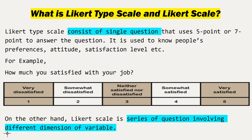For example, there is a question: how satisfied are you with your job? The respondent will have 5 categories: number 1 — very dissatisfied, number 2 — somewhat dissatisfied, number 3 — neither satisfied nor dissatisfied (neutral), number 4 — somewhat satisfied, and number 5 — very satisfied. The respondent checks one category out of these five, and there is only one question.